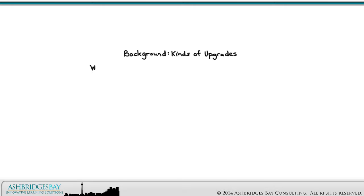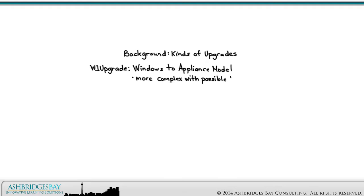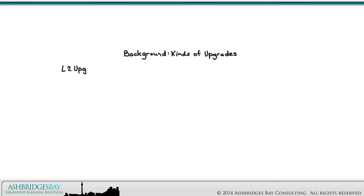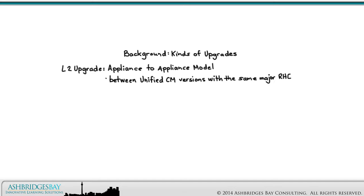It's good to know the kinds of upgrades and their operational implications. W1 upgrades are upgrades from the version 4.x Windows model to the Red Hat Enterprise Linux appliance model. These upgrades are more complex and can have the longest downtime — for example, an upgrade from 4.1.3 to 7.1.3. For a jump migration, you need to take your 4.x software to either 6.1.4 or 7.1.3. L2 upgrades are upgrades from one version of the appliance model to another running on the same major version of Red Hat Enterprise Linux. These upgrades are the least complicated and have the shortest downtime.